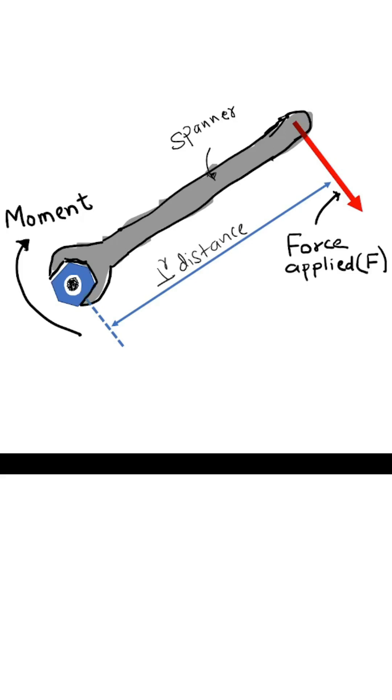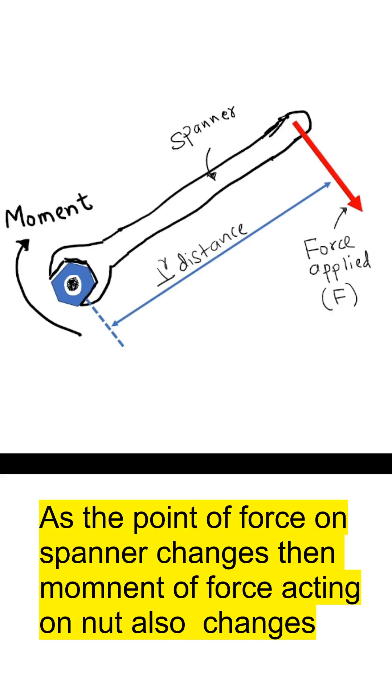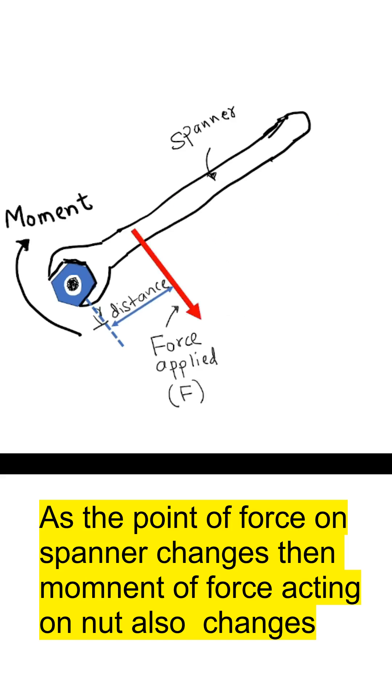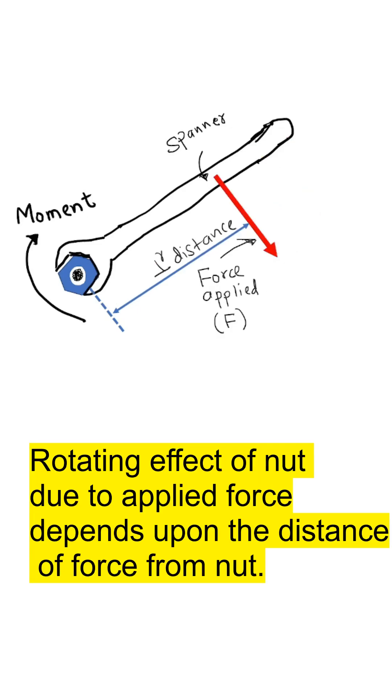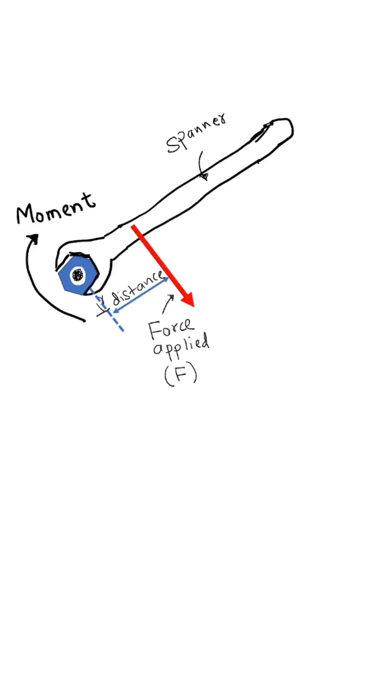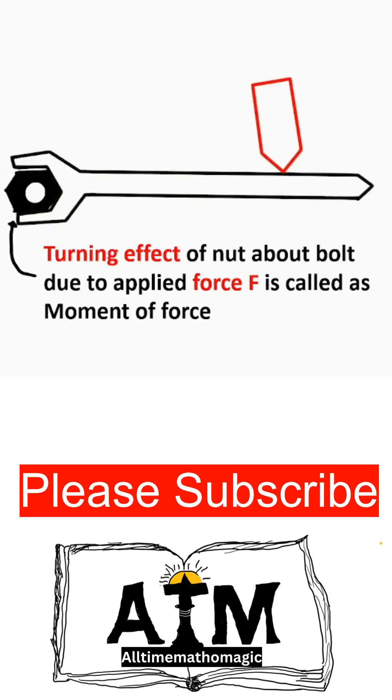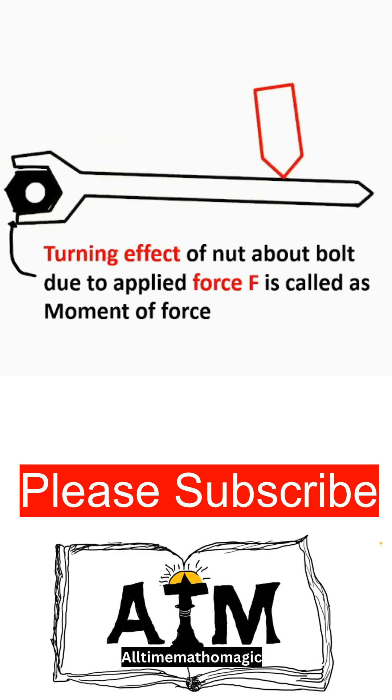We can apply the force on the spanner at different positions. The force moves near to the bolt, then further near to the bolt. As the position of the applied force is changing, the rotating effect of the nut is also changing. The turning effect of nut about bolt due to applied force F is called the moment of force.